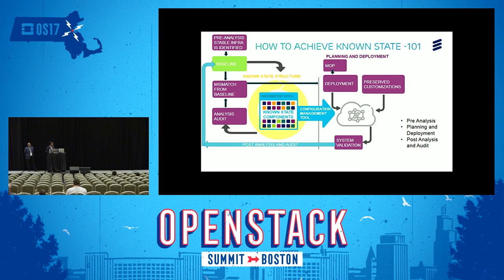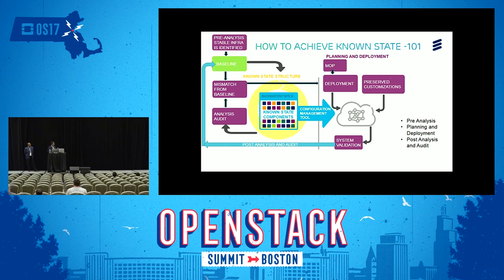Looking at the diagram, we have a baseline ready to deploy into an inconsistent site X. In the pre-analysis phase, we also take the data from this inconsistent site and perform analysis. Once we collect the data, we do the analysis and then compare the data from the inconsistent site against the baseline.